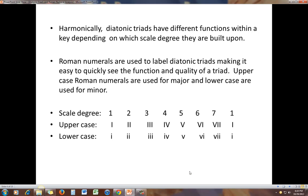Roman numerals are often used to label diatonic triads, which can make it easier to see quickly what the function and quality of a triad are. Why Roman numerals? Because you can have uppercase and lowercase numbers because they actually use letters.